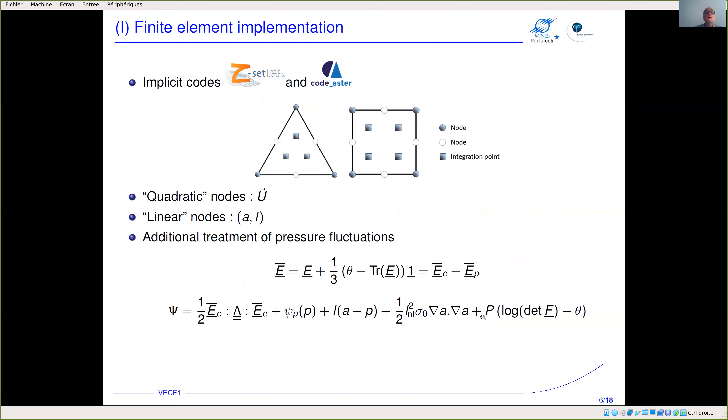This model was implemented in the implicit code Z-set for Mines and Code_Aster for EDF. We used a mixed formulation in which quadratic nodes are used to interpolate the displacement and linear nodes—the corner nodes—are used to interpolate the plastic strain at nodes and the plastic multiplier. We also have an additional treatment for pressure fluctuation.